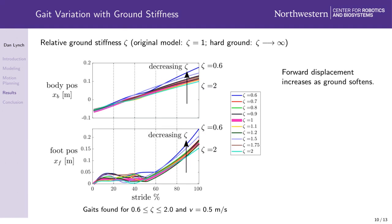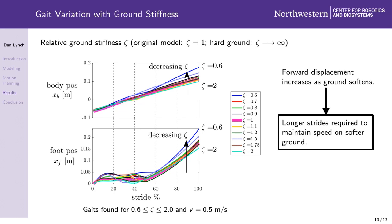First, notice that the body's forward displacement increases as the ground gets softer. This trend is also reflected in the foot's forward displacement, at least during flight. This suggests that on softer ground, longer strides might be necessary to hop forward at the same speed, possibly because the monopod spends more time in stance on softer ground.